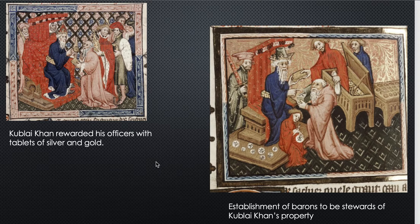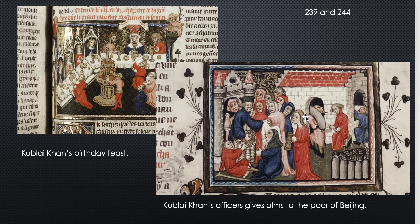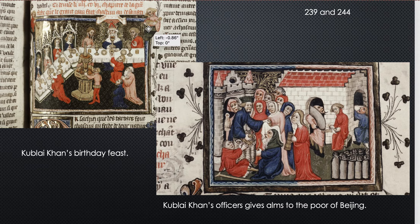On the right, it's the same Kublai Khan wearing his blue robe, but this time his headgear is different — it looks a little more like some sort of Chinese-style hat. This is where he's securing his barons to be stewards of his property. Both scenes look similar — it looks like the figures are all the same portraits.